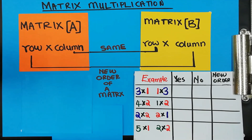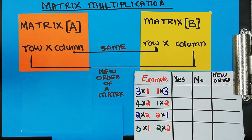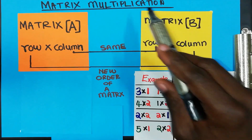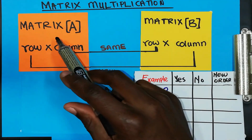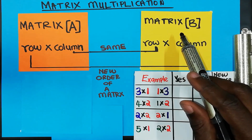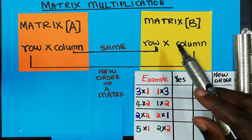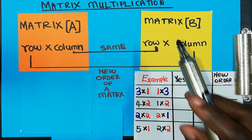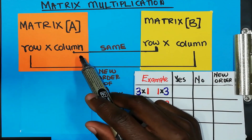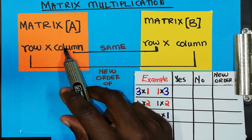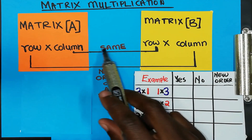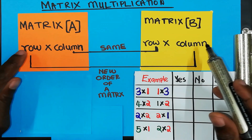Welcome to Plane Techniques, this is your boy Champ. In this video we are going to discuss matrix multiplication. Now say you have matrix A and matrix B — before you can continue with the multiplication of these two matrices, you have to check something: the middle numbers must be the same, and the last numbers will give you the new order of the matrix.